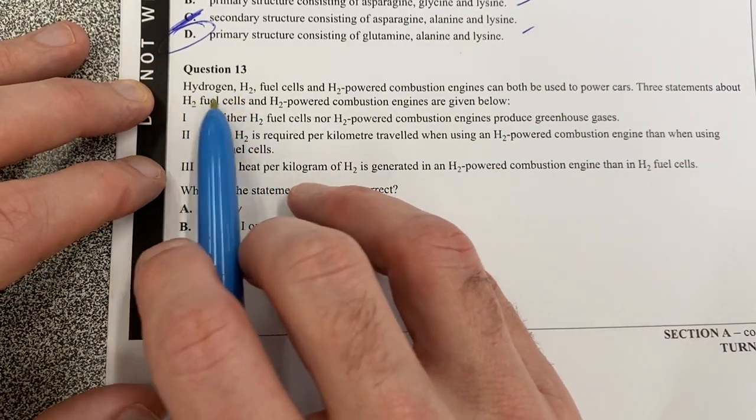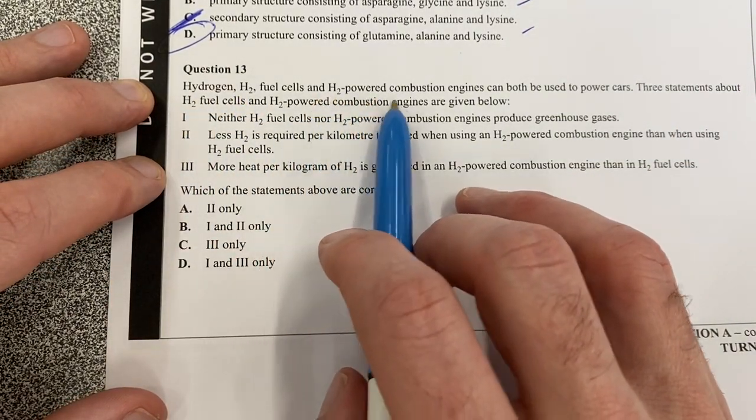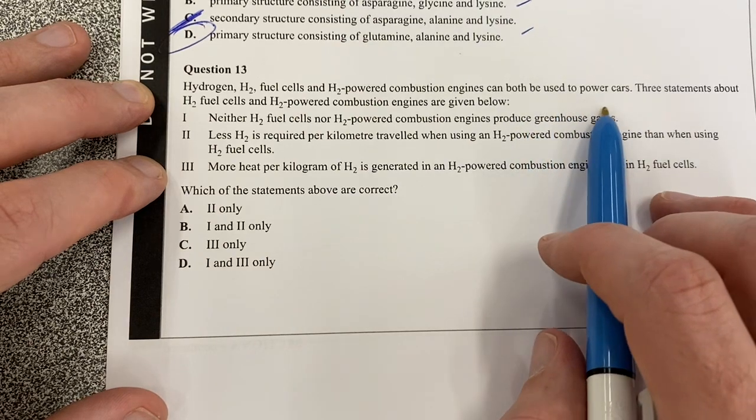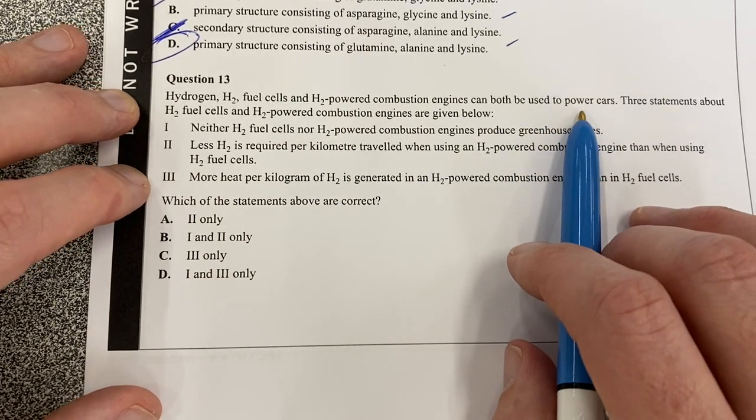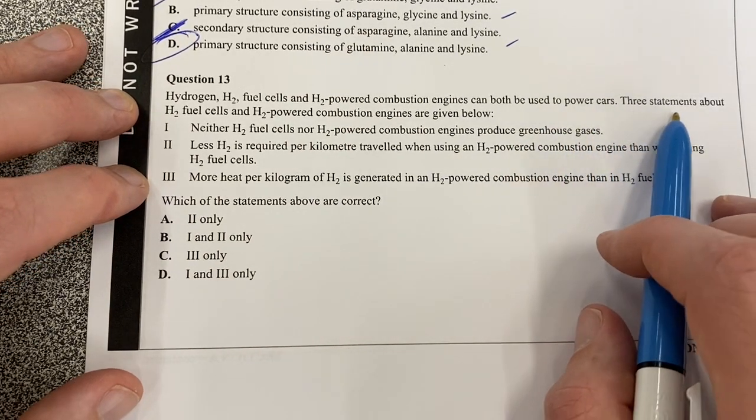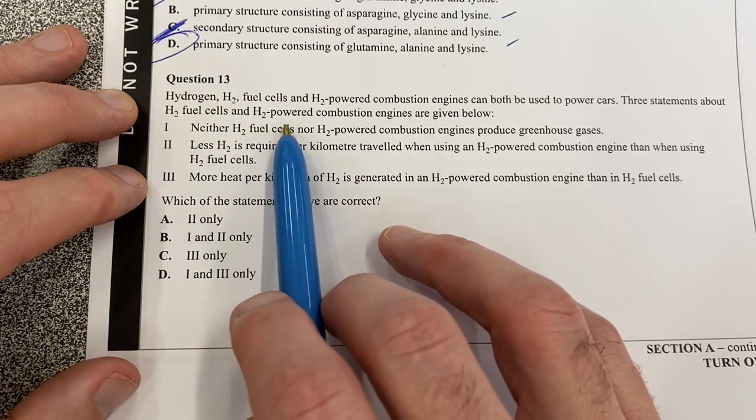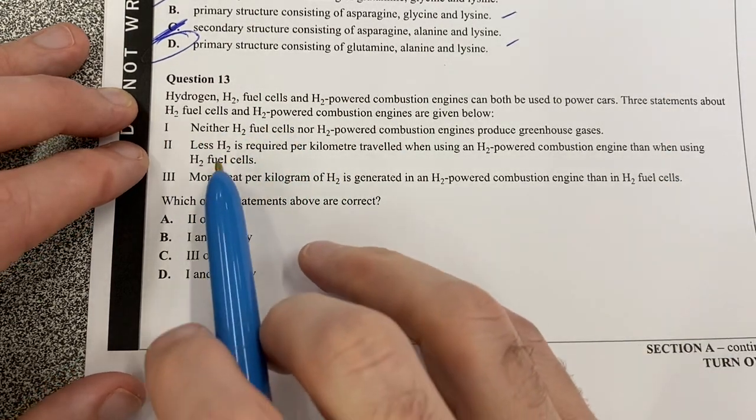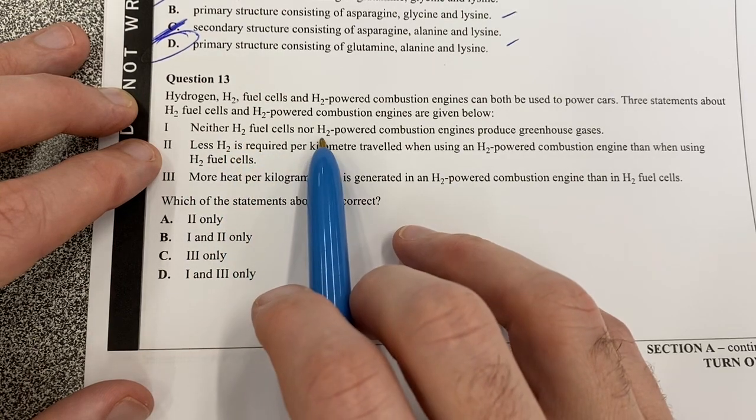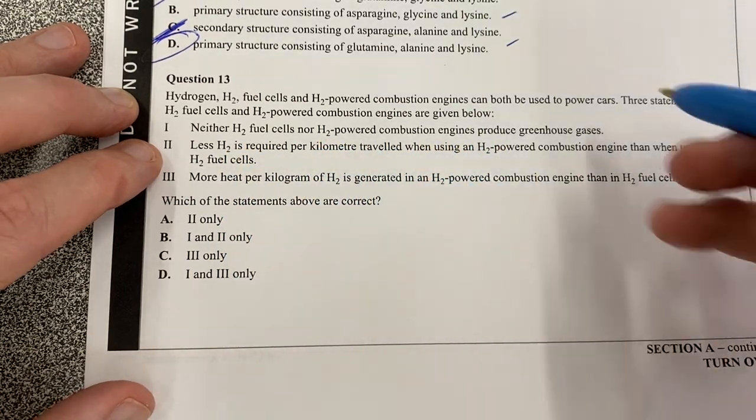Hydrogen H2 fuel cells and H2 powered combustion engines can both be used for cars. Apparently they can already. Three statements about hydrogen fuel cells and hydrogen powered combustion engines below. Let's have a look. Neither H2 nor H2 powered combustion engines produce greenhouse gases.